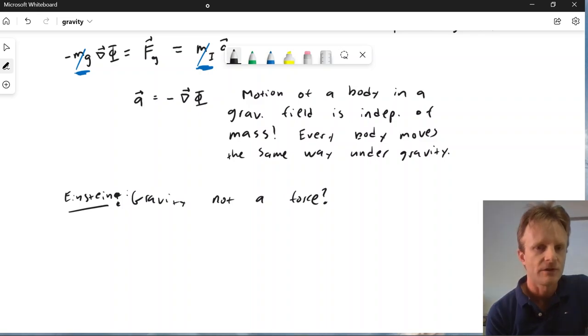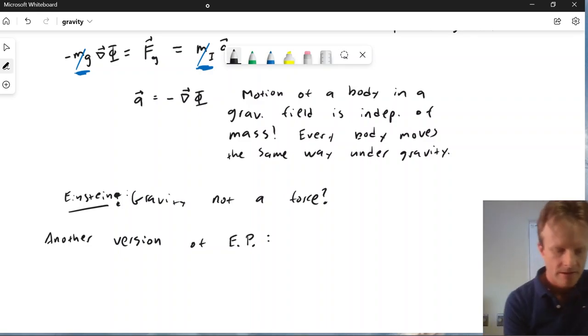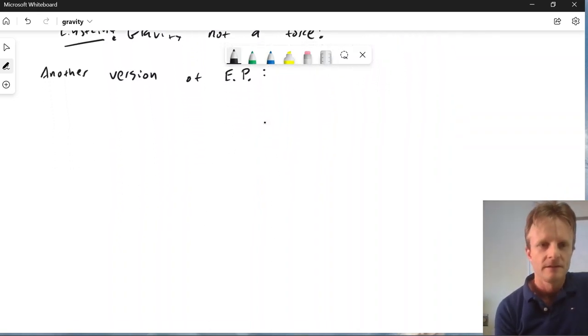All right, here's another version of the equivalence principle. I don't know if this one has a name. So E.P. for equivalence principle. This one involves elevators. So you could imagine I'm on the surface of the earth. And I'm in a box here, an elevator car, if you like, just sitting on the surface of the earth.